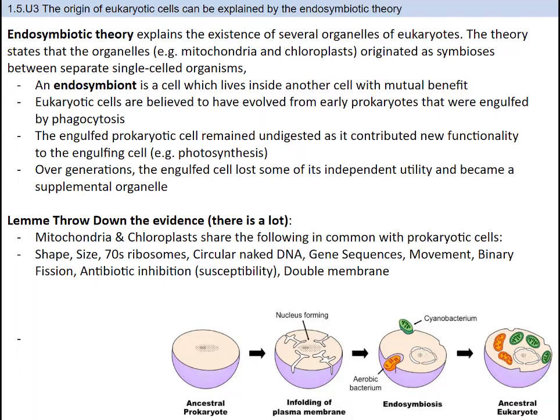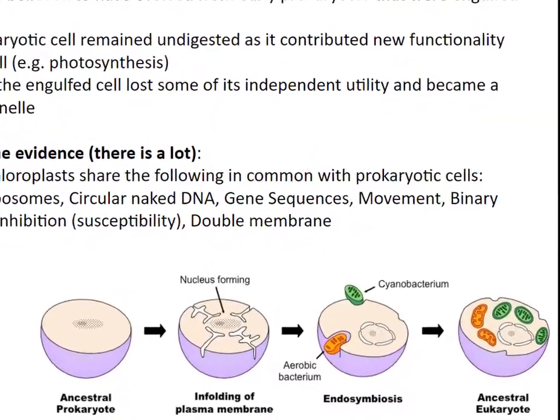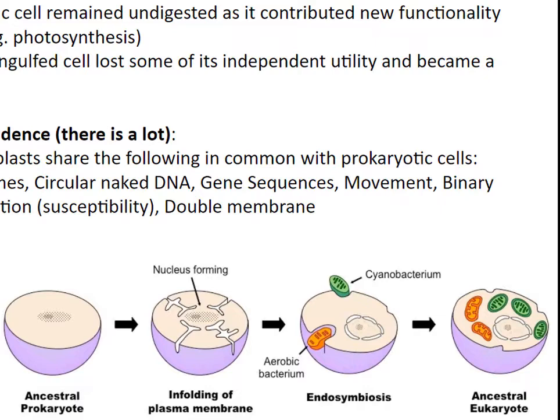The other thing we need to discuss is how eukaryotic cells arose. Eukaryotic cells are membrane-bound and have membrane-bound organelles. Some of these organelles may have ended up inside cells and became incorporated. The endosymbiotic theory explains the existence of several organelles of eukaryotes. The theory states that organelles — specifically mitochondria and chloroplasts — originated as symbioses between separate single-celled organisms. An endosymbiont is a cell that lives in another cell with mutual benefit. Eukaryotic cells are believed to have evolved from early prokaryotes that were engulfed by phagocytosis. The engulfed prokaryotic cell remained undigested as it contributed new functionality, for example photosynthesis. Over generations, the engulfed cell lost some of its independent utility and became a supplemental organelle.